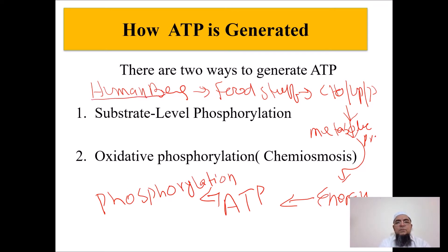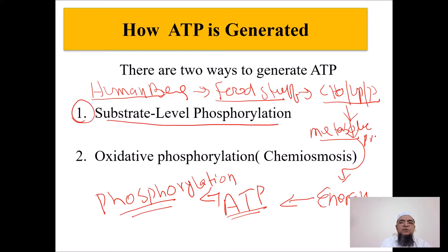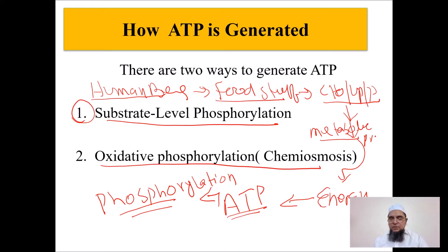Living systems utilize foodstuffs like carbohydrates, lipids, and proteins, putting them through metabolic processes, which release energy in the form of ATP. The process by which we obtain this ATP is known as phosphorylation. There are two types of phosphorylation: substrate level phosphorylation and oxidative phosphorylation.